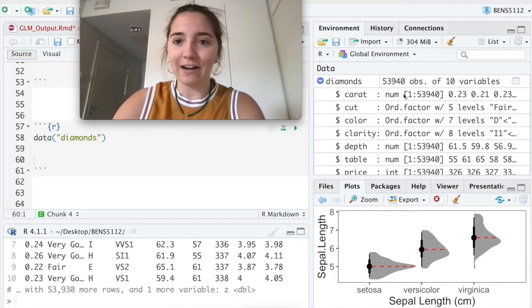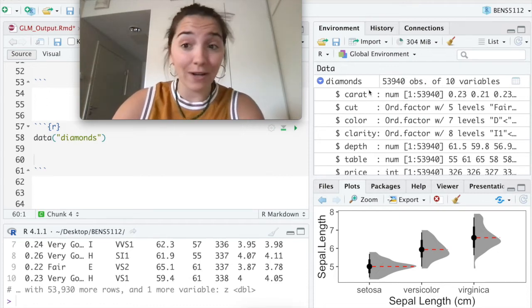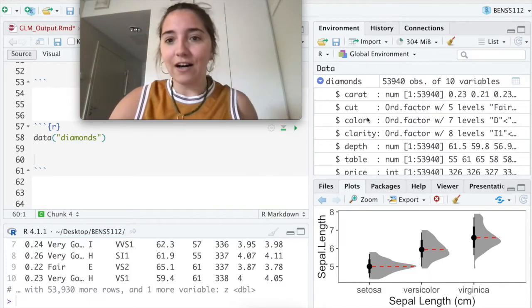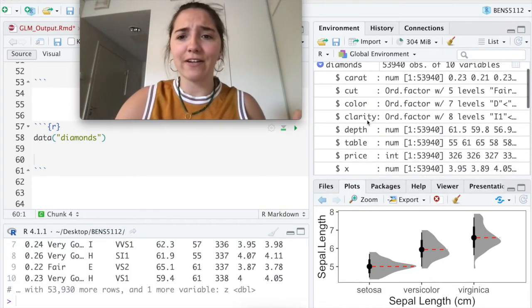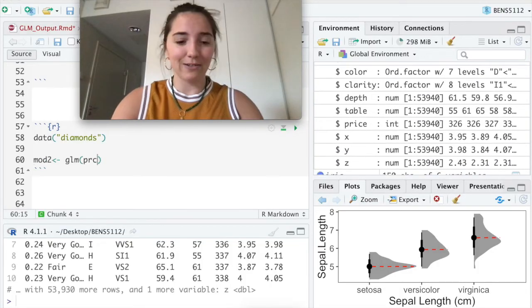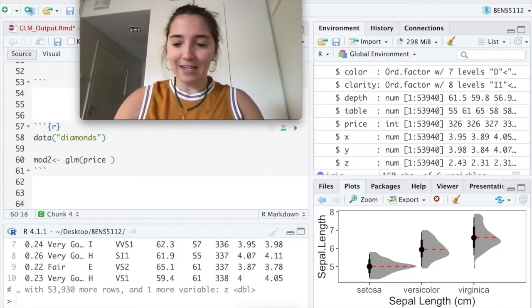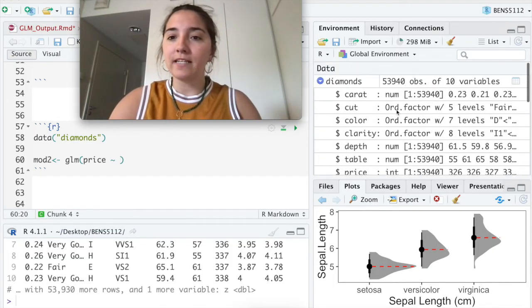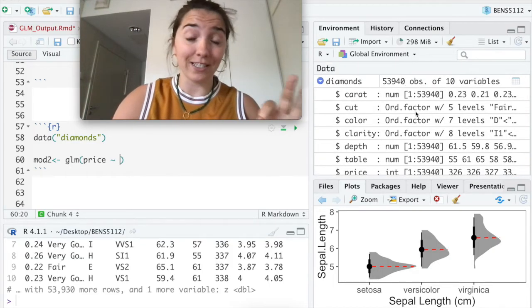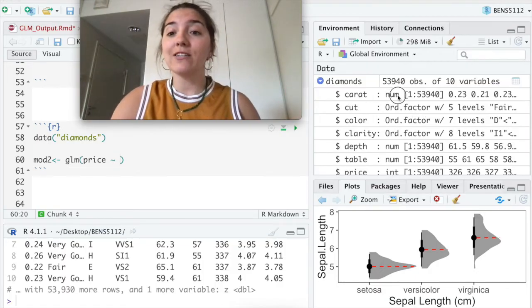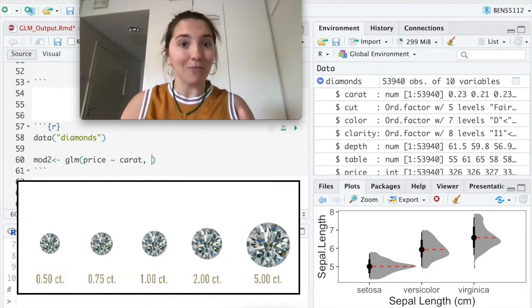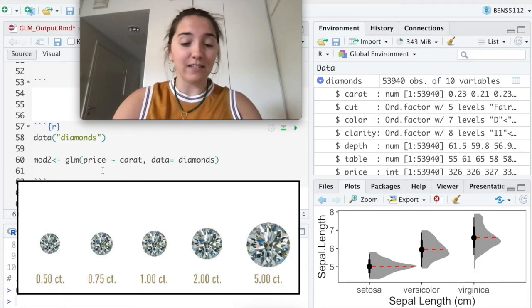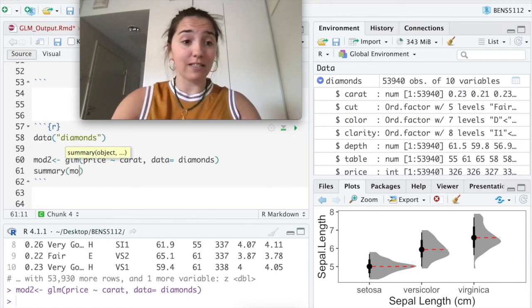So let's look. It's got a bajillion variables. It looks at the carat. So I guess like that's like the size of a diamond. The cut, the color, the clarity, the depth, the table, the price. Let's look at the price of a diamond. A price of a diamond. I just feel like I should talk like that. And let's predict it by, these are ordered factors which are notoriously hard to work with. So we're not going to look at them right now. Let's just look at carat. You might think, oh, the bigger the carat, the higher the price, right? Those big diamonds. And so we are going to now look at the summary of our model.